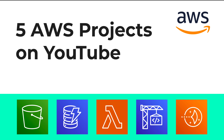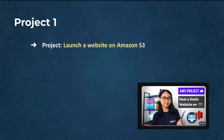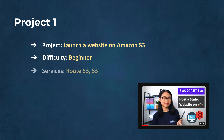Let's take a look at these five projects one by one. Moving on to Project 1 — most of you have probably heard of Tag with Lucy. In this project you will learn how to launch a website on Amazon S3. It covers basic AWS concepts: setting up a bucket, configuring static website hosting, and making your site accessible over the internet. The level is beginner, and the services used are Amazon Route 53 and S3. The video length is eight minutes.